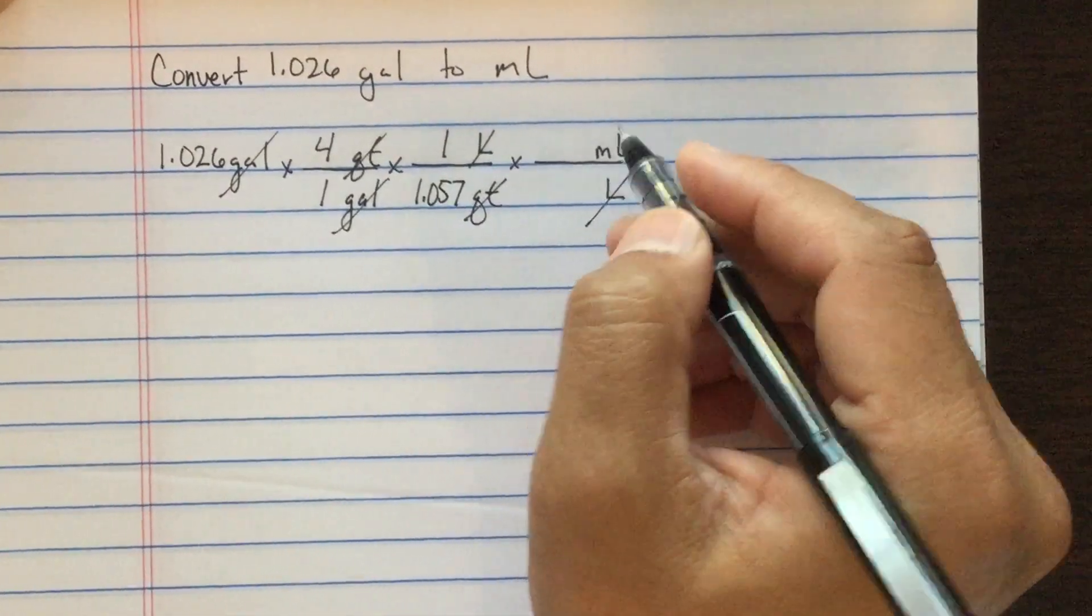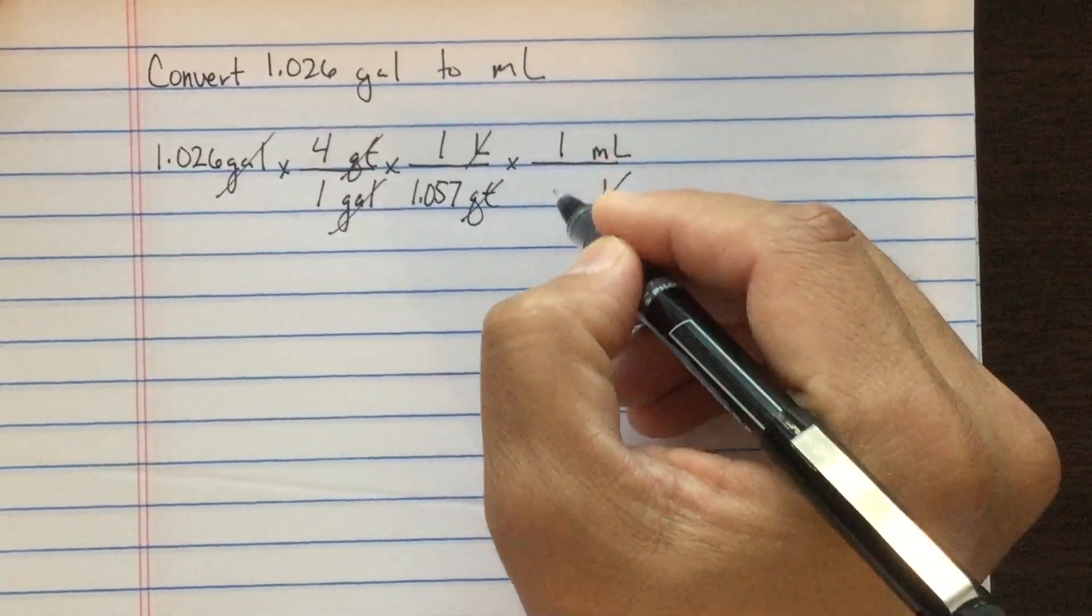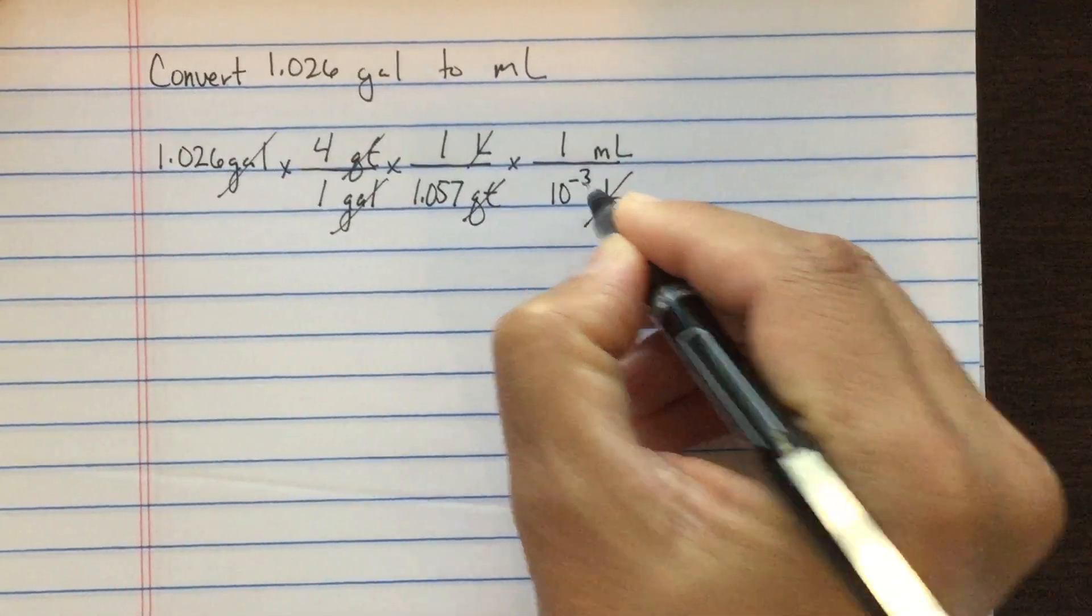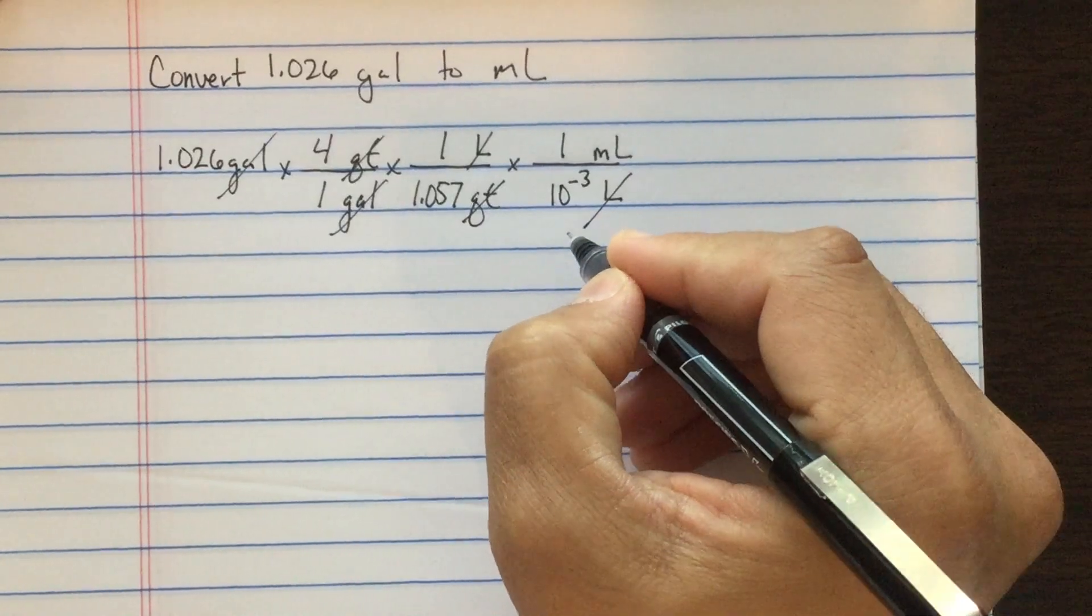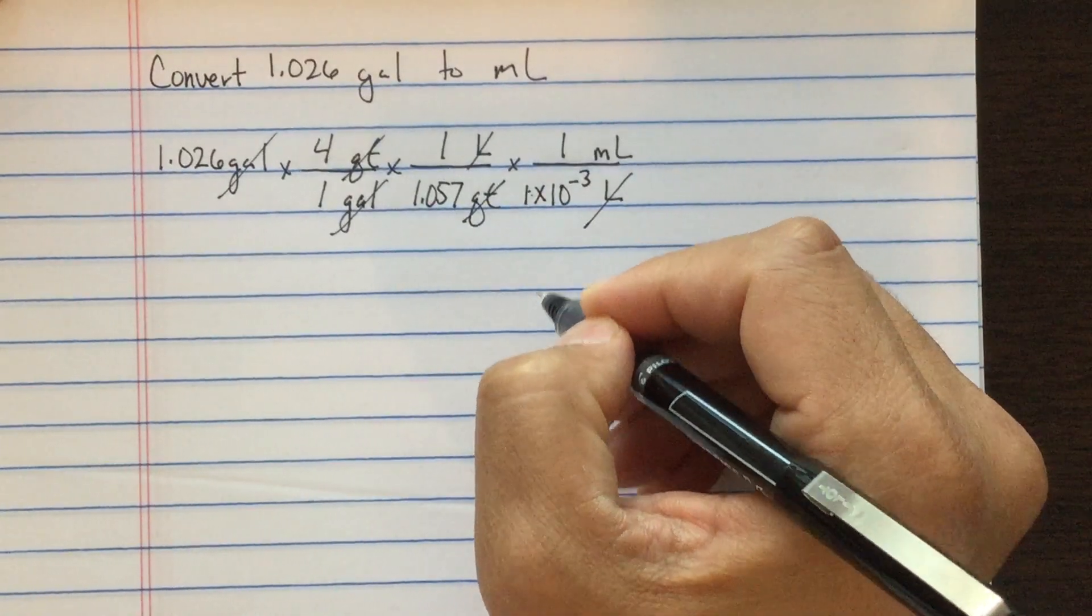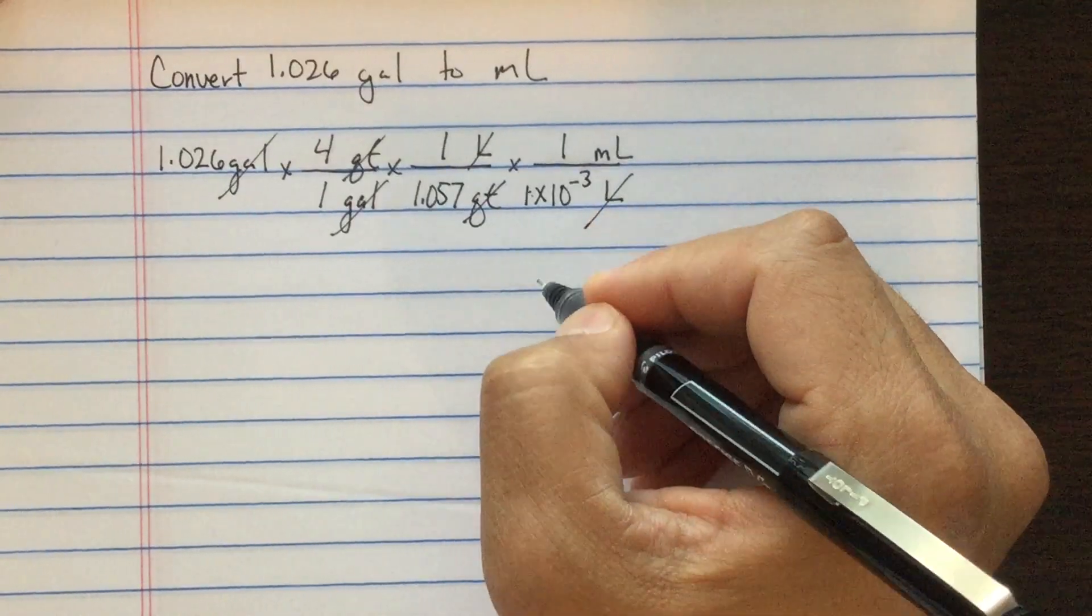The relationship here for milliliters and liters according to our table: one milliliter is 10 to the minus three liters. In some of your calculators you might have to plug in one times 10 to the minus three, but 10 to the minus three is the same thing as one times 10 to the minus three.